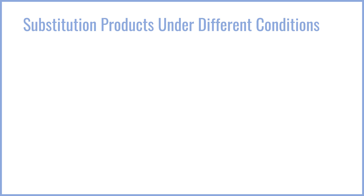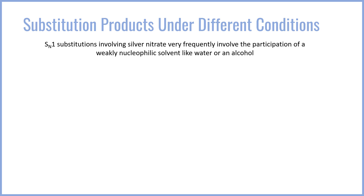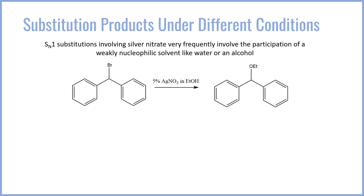The SN1 substitution with silver nitrate very frequently involves the participation of the solvent — it enhances what are known as solvolysis reactions. For example, if you have this bromide with two phenyl groups adjacent to it, it's very strongly resonance stabilized and would form a very good cation. If you were to treat this with silver nitrate, that bromide is going to get very quickly pulled off by the silver, giving you the resulting cation. If you were to do this in ethanol, ethanol is a weak nucleophile and so it won't directly attack the bromide; instead it will wait for cation formation. Once it forms, the ethanol very easily substitutes onto the cation, giving you the resulting ether.